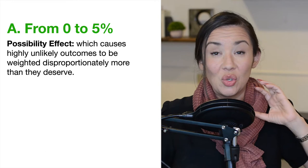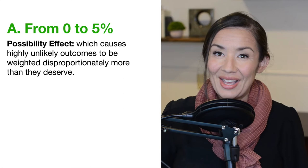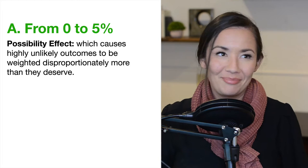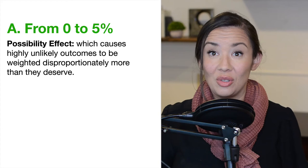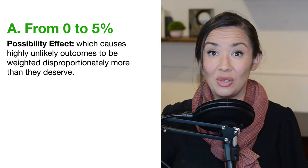We add additional weighting to low-probability scenarios. This is why we buy lottery tickets — going from zero probability to a tiny probability like 0.005%. We're willing to pay more money for that small amount of probability far in excess of the actual expected value of the gamble.